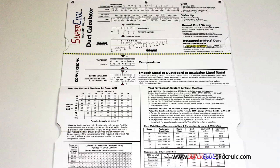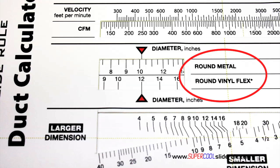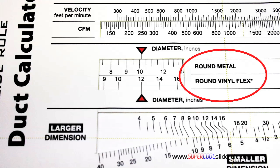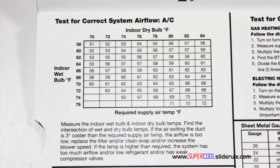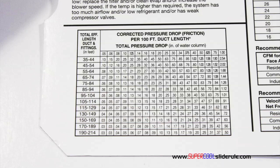Inside is packed with even more information. It performs sizing of both metal and flexible duct. It has the only direct reading conversion from smooth metal to insulation-lined metal we've ever seen. The majority of technicians have never been taught that if the insulation is on the inside of the ductwork, you cannot size it with a regular duct calculator. It has step-by-step directions for determining airflow through a gas furnace, electric furnace, or an air conditioning unit. It has pressure drop multipliers for ductwork as well as recommended velocities.